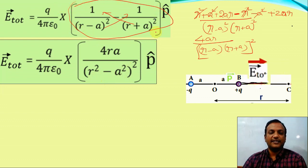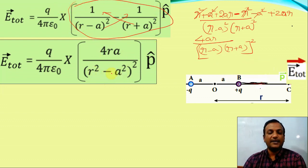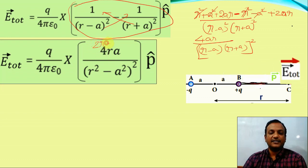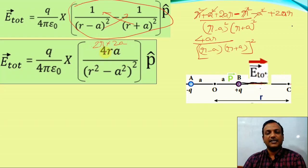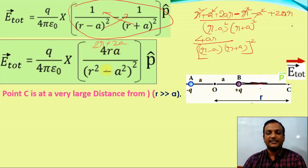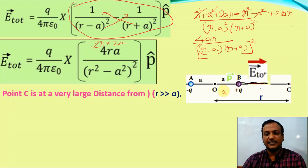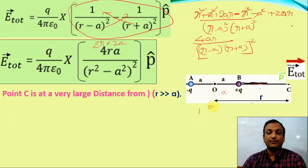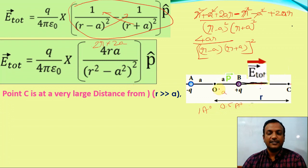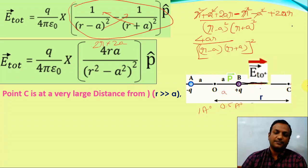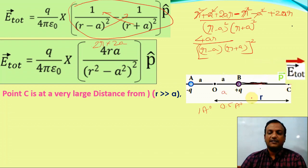The second step gives us 2ar times 2a in the numerator. Now, the center-to-charge distance is a and the point C is at a large distance r. Since the dipole is very small compared to the distance r, the value of a is very small when compared to r.